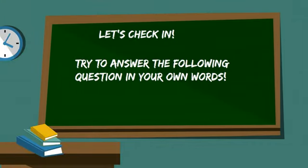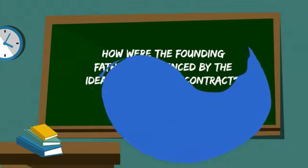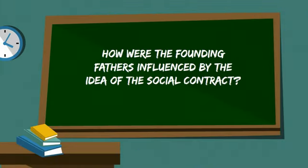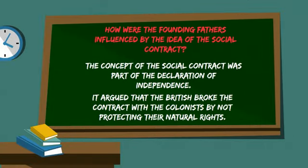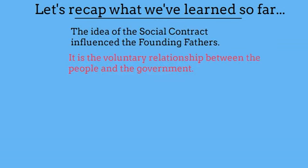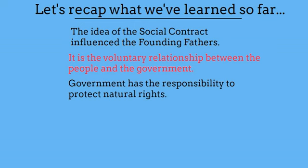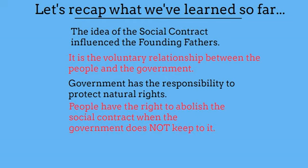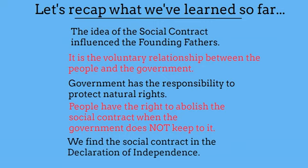Let's check in. How were the Founding Fathers influenced by the idea of the social contract? The concept of the social contract was part of the Declaration of Independence — it argued that the British broke the contract with the colonists by not protecting their natural rights. To recap: the social contract is a voluntary relationship between the people and the government, the government has a responsibility to protect natural rights, and the people have the right to abolish the social contract when the government does not uphold it.